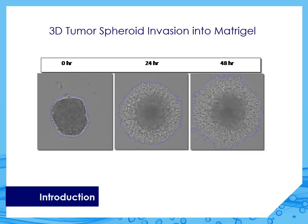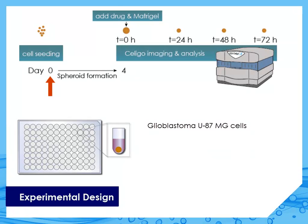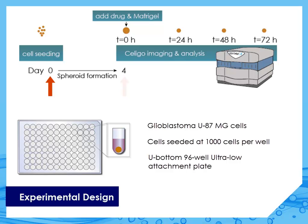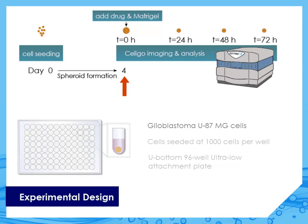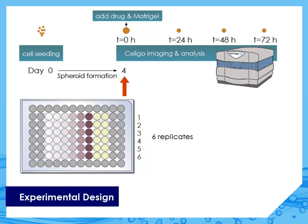Let me show you how this experiment was conducted. Glioblastoma U87-MG cells were first seeded at 1,000 cells per well in a U-bottom 96-well ultra-low attachment plate. Spheroids were then allowed to form over the next four days. On day four, U87-MG spheroids were embedded into matrigel with serially diluted 17-AAG drug treatment or DMSO vehicle control. Six replicates were prepared for each condition, and this plate is now ready to be imaged.